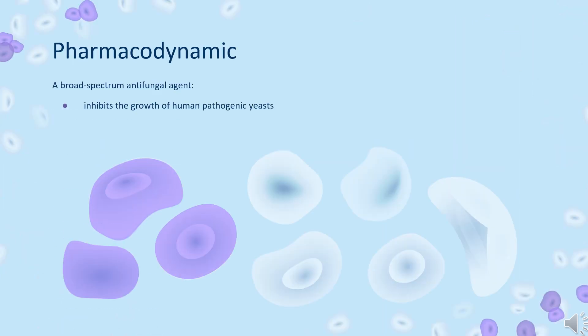Tiaconazole is a broad-spectrum imidazole antifungal agent that inhibits the growth of human pathogenic yeasts. It exhibits fungicidal activity in vitro against Candida albicans, other species of the genus Candida, and against Torulopsis glabrata. Tiaconazole prevents the growth and function of some fungal organisms by interfering with the production of substances needed to preserve the cell membrane. This drug is effective only for infections caused by fungal organisms; it will not work for bacterial or viral infections.